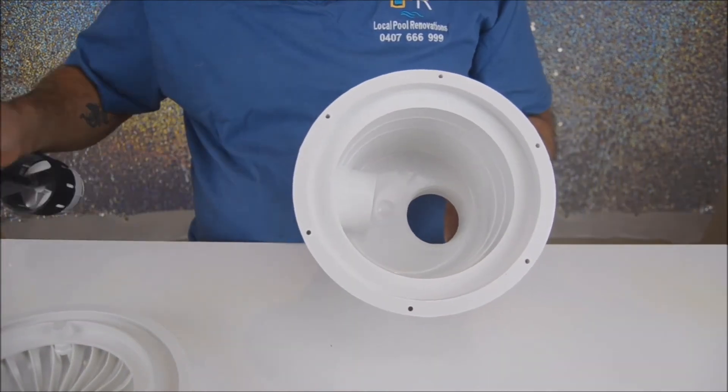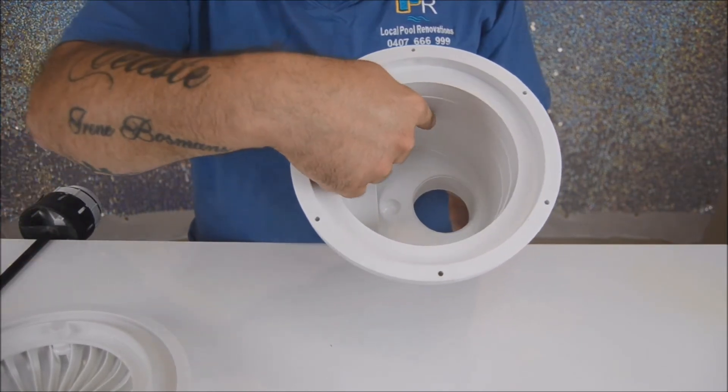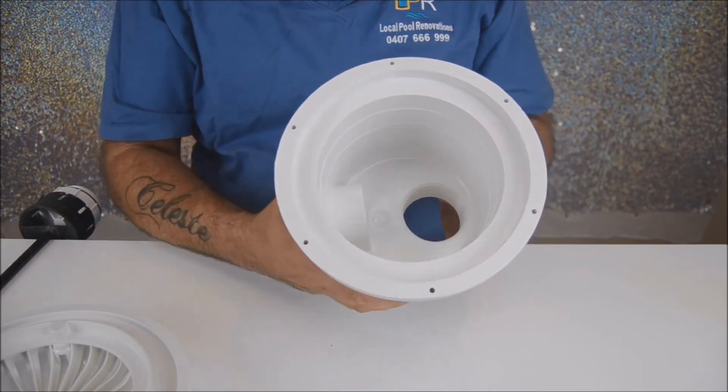You will be left with a hole at the bottom of your main drain lid and it's very important to not get this hole clogged or blocked in any way.